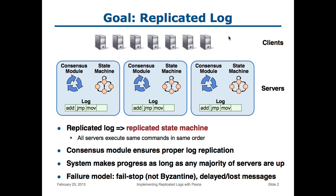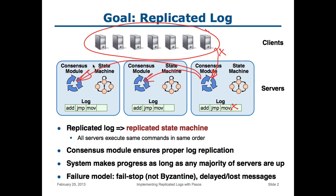If each of those state machines receives the same set of commands in the same order, then they should all behave identically and produce the same results. Ideally, if some of the machines crash, the others can continue to provide service. It's the goal of the replicated log to make sure that those state machines process commands in the same order. We first store the commands in a log and guarantee that all of the logs have the same commands in the same order, then we process the commands out of the log, and that guarantees the state machines all do the same thing.